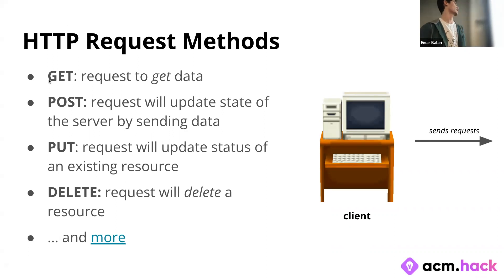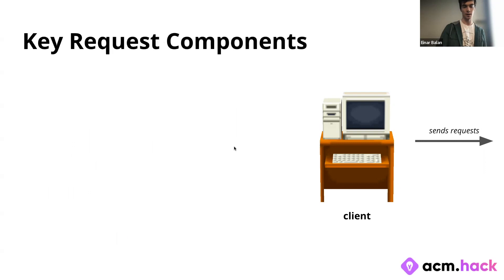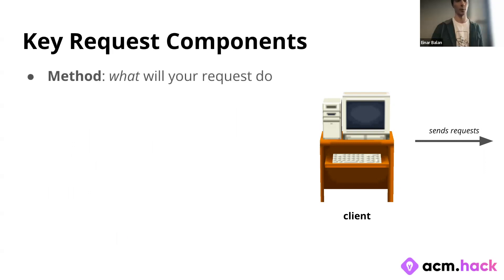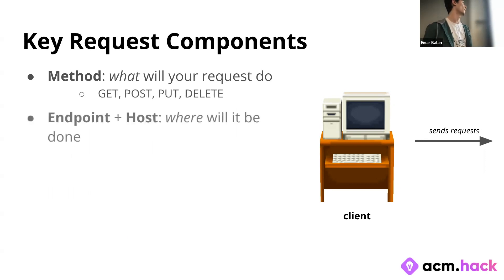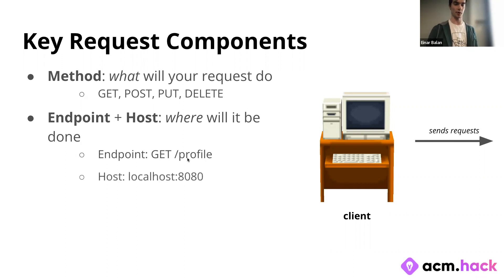There are many more request methods besides these four, but GET, POST, PUT, and DELETE are the most pertinent for us here — you can check the link for more. To summarize: the method indicates what your request will do, the endpoint indicates where it will get done (like GET /profile means get profile info from that path), and the host indicates the server address such as localhost:8080.